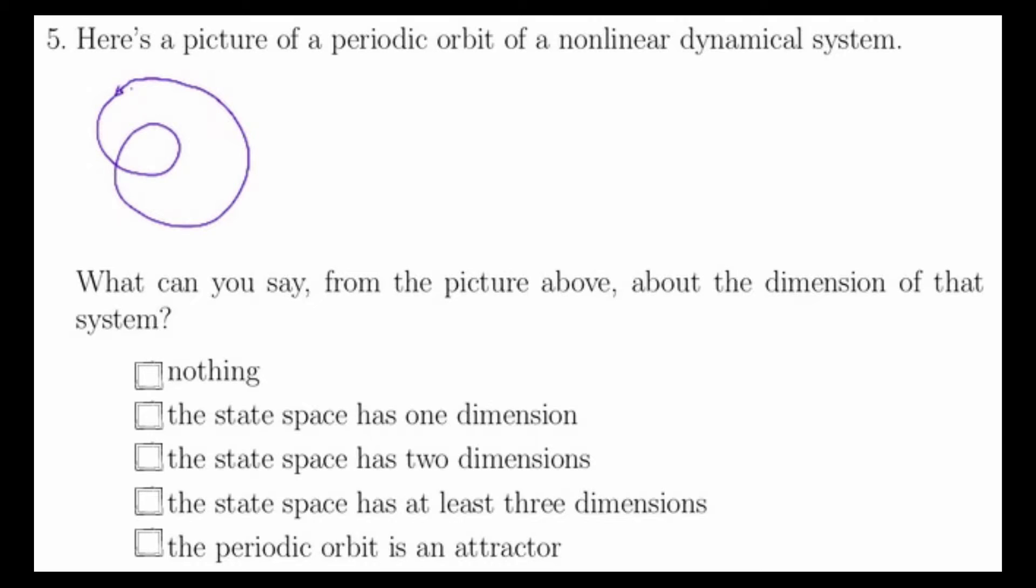For question five, we're given the following periodic orbit of a nonlinear dynamical system and asked what we can say about the dimension of the system. We can actually say something. For example, we can say that the state space has to be more than one dimension because it's moving in two directions.